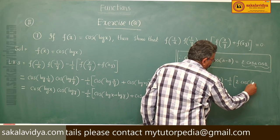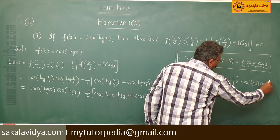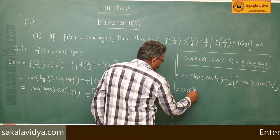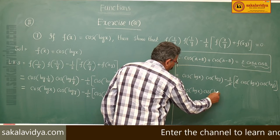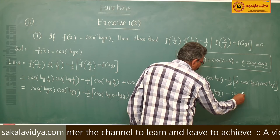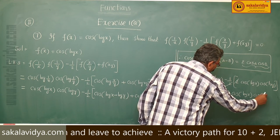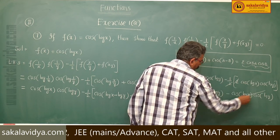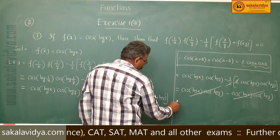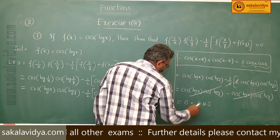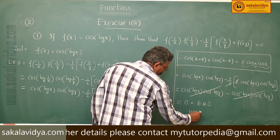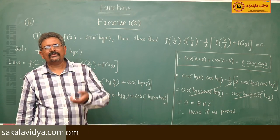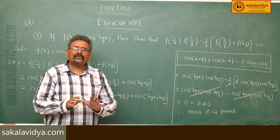The 2 and the half cancel each other. We have cos of log x cos of log y minus cos of log x cos of log y. Both terms cancel, and we get 0, which is the RHS. Hence it is proved. So far in functions, in exercise 1a, all the problems have been discussed.